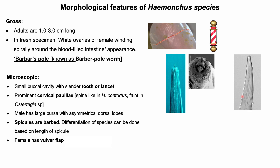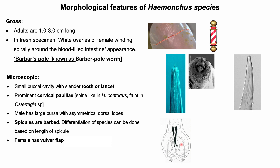As Hemonchus is a bursate nematode, the male parasite bears a large bursa with an asymmetrical dorsal lobe. Differentiation among different species can be done based on the length of the spicules. The female parasite has a vulvar flap.